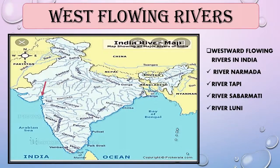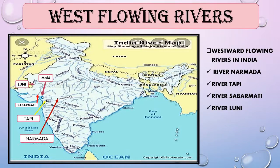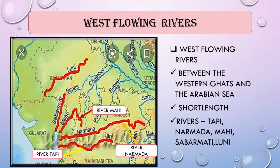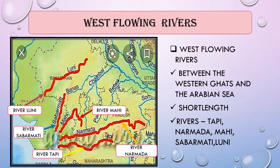The west flowing rivers are Narmada, Tapi, Mahi, Sabarmati, and Luni. These rivers originate in central India, flow westward, and enter the Arabian Sea. West flowing rivers are shorter in nature. Rivers such as Narmada, Tapi, and Sabarmati are seasonal rivers as they are fed by rain.